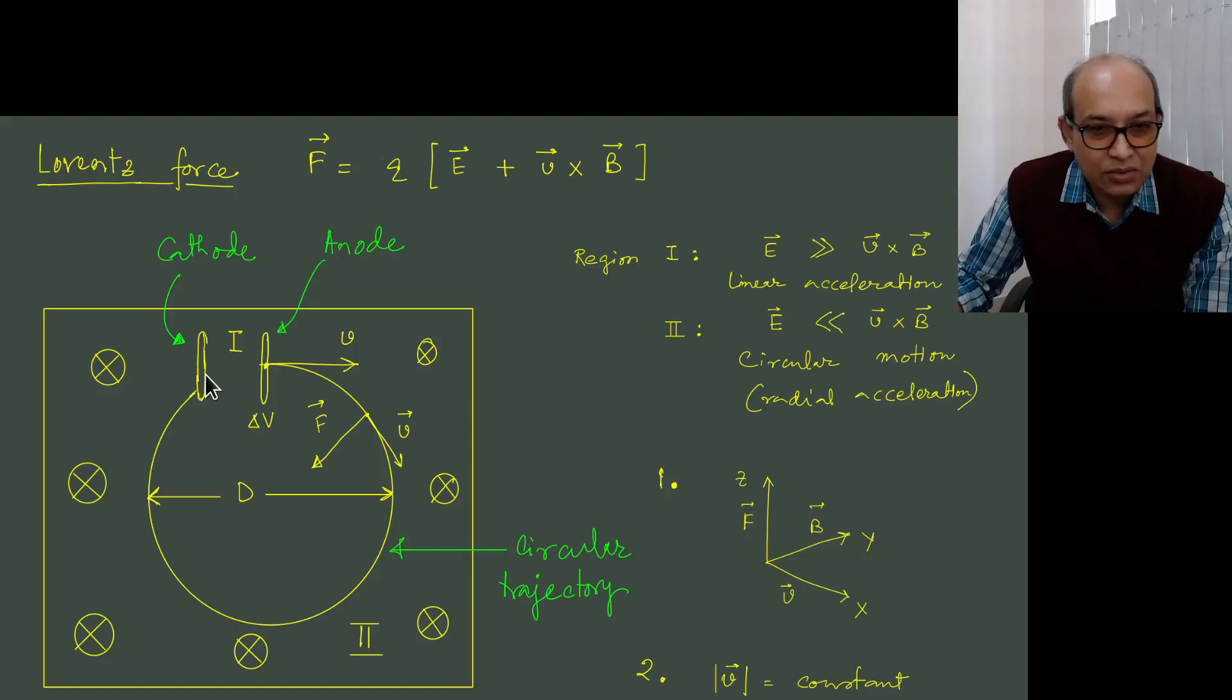The cathode is heated up and due to thermionic emission the electrons released from the cathode and are attracted towards positive charge, relatively speaking, anode. So electrons are attracted towards anode because anode is kept at a higher potential delta V with respect to cathode.